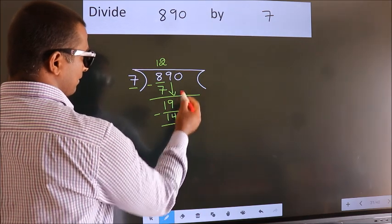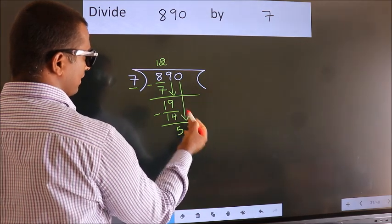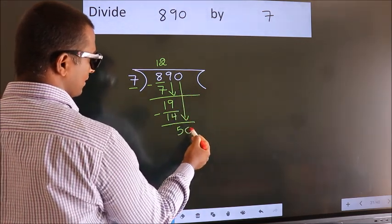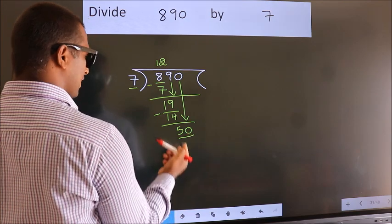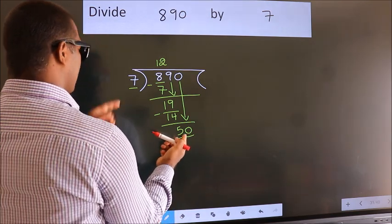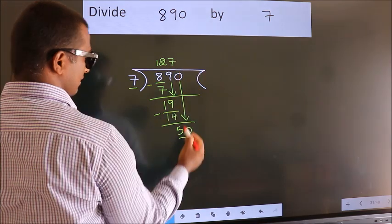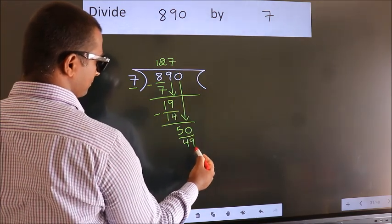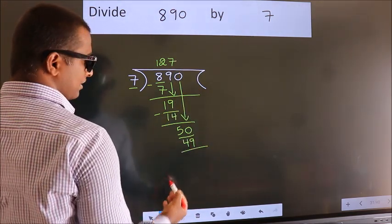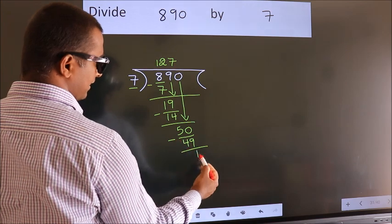After this, bring down the beside number. So 0 down, so 50. A number close to 50 in the 7 table is 7 sevens, 49. Now we subtract. We get 1.